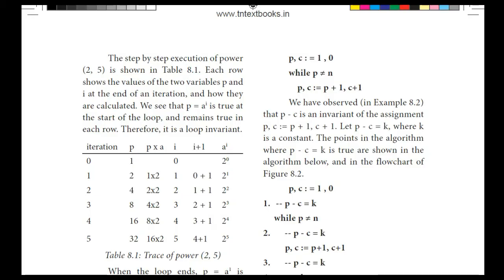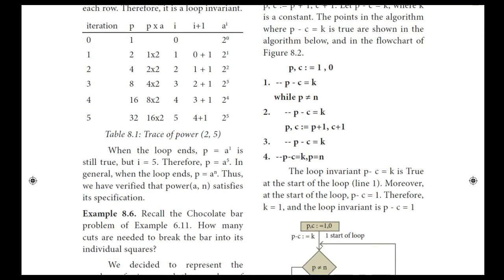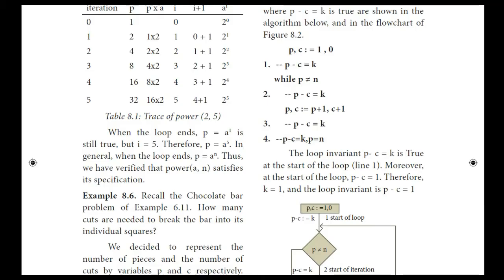We observe that P minus C is an invariant of the assignment. That means P minus C remains constant. Let P minus C = K. We verify that P minus C = K is true at every point in the assignment, as shown in the algorithm and flowchart of Figure 8.2.